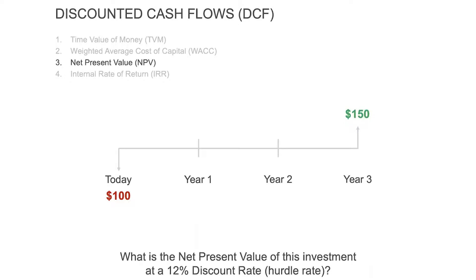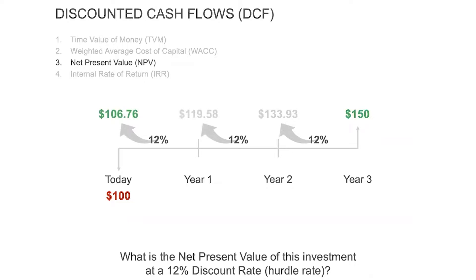Most companies want a return greater than their weighted average cost of capital — sometimes two or three times it. So they'll give you what they call a discount rate or hurdle rate. This hurdle rate is what we use to discount those future cash flows from future value to present value. Let's imagine your company decides they want a 12% return for this type of investment. I apply that 12% discount rate to $150: discounted one year it's $133.93, another year $119.58, and brought all the way to present day, $150 in three years discounted at 12% equates to a present value of $106.76.